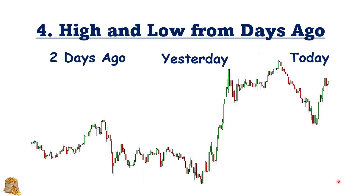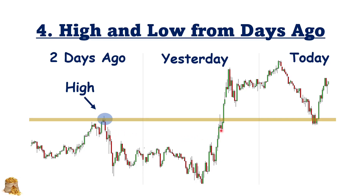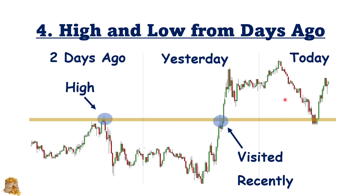Highs and lows from days ago can also serve as support and resistance. Two days ago we have a high and we can draw a horizontal level. Yesterday, you can see the market goes up to test this level — there's a big tail, which means it's testing the level. However, it succeeds and goes up to penetrate this level, and this level is also recently visited. Today, after the market opens, it goes down to test this level again. So highs and lows from days ago sometimes can also serve as support and resistance levels.